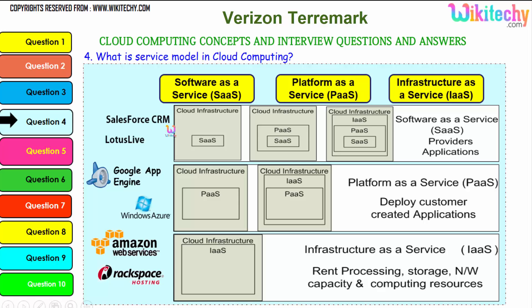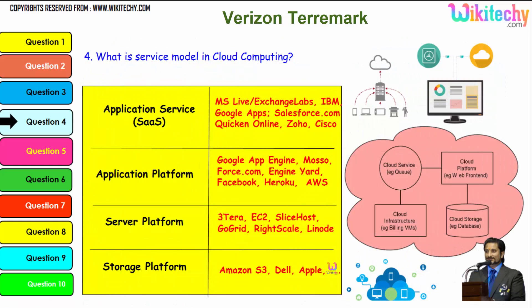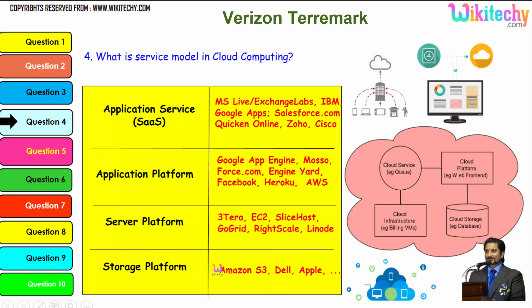Typical SaaS examples include Lotus Live and Salesforce CRM. For PaaS it is Windows Azure and Google App Engine. For IaaS you have Amazon Web Services and Rackspace Hosting. Additional examples include application services, application platforms, server platforms, and storage platforms provided by Amazon S3, Dell, and Apple.